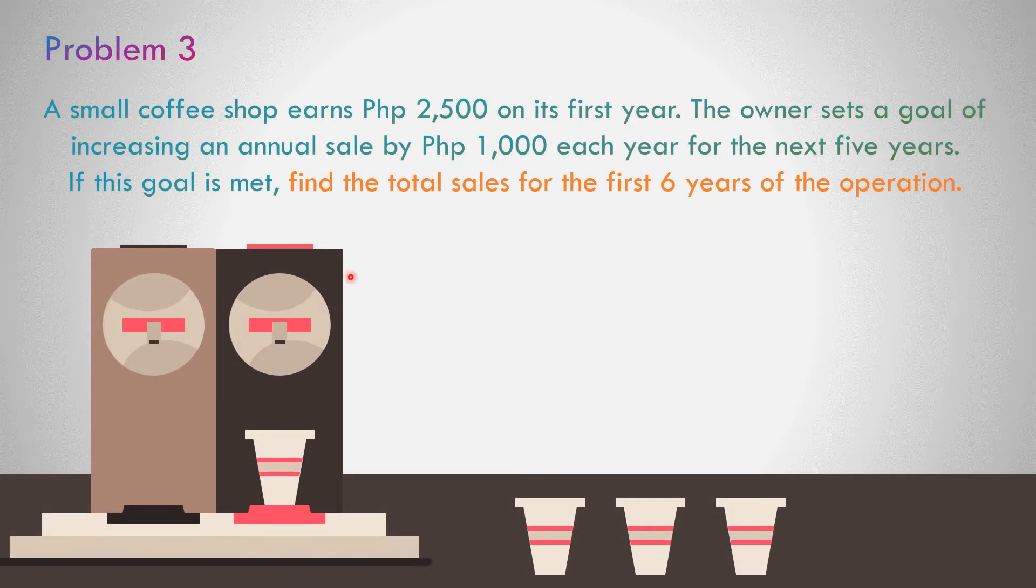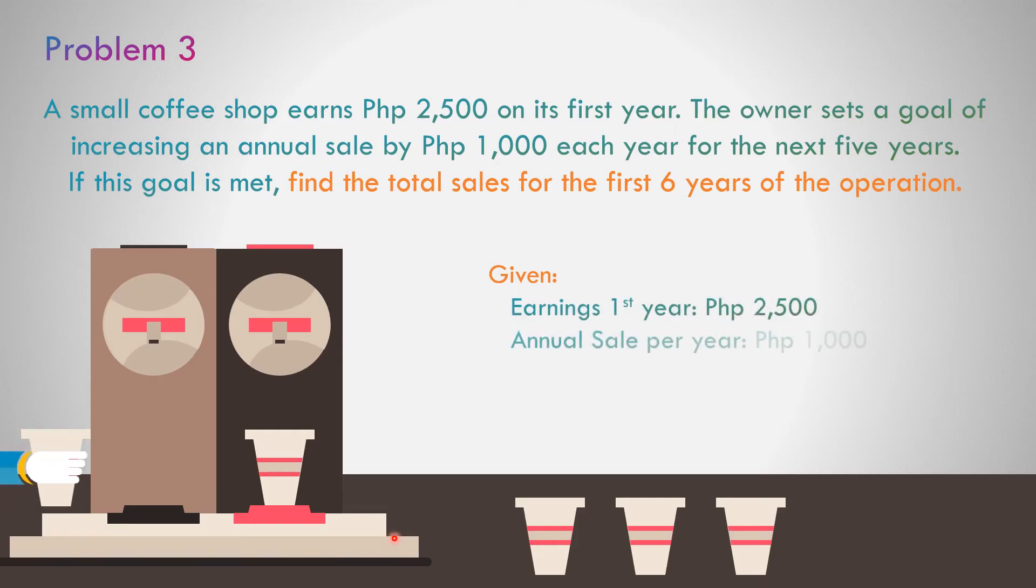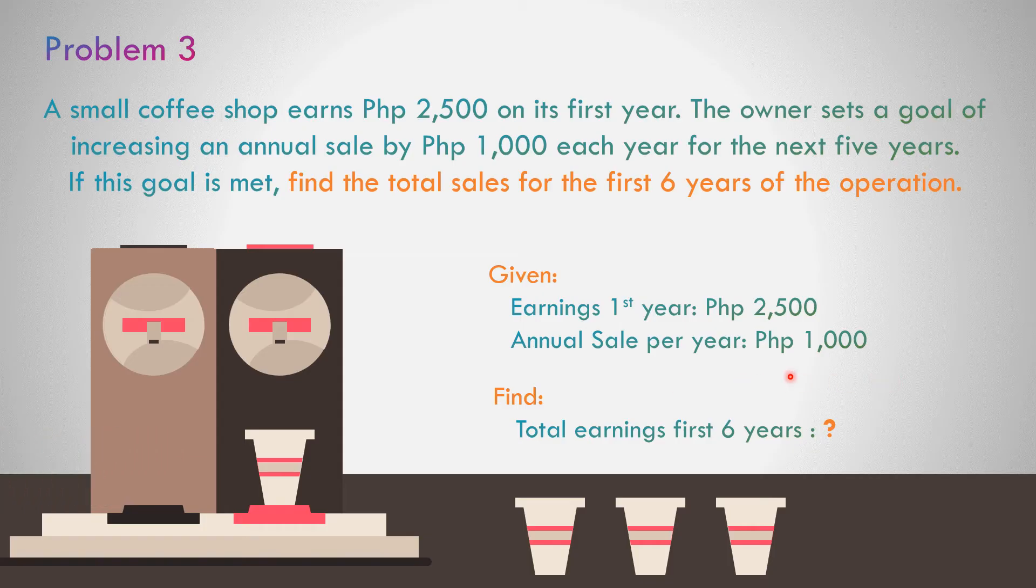Problem number 3. A small coffee shop earns 2,500 on its first year. The owner sets a goal of increasing annual sale by 1,000 each year for the next 5 years. If this goal is met, find the total sales for the first 6 years of operation. The earnings in the first year is 2,500, annual sale per year is 1,000.